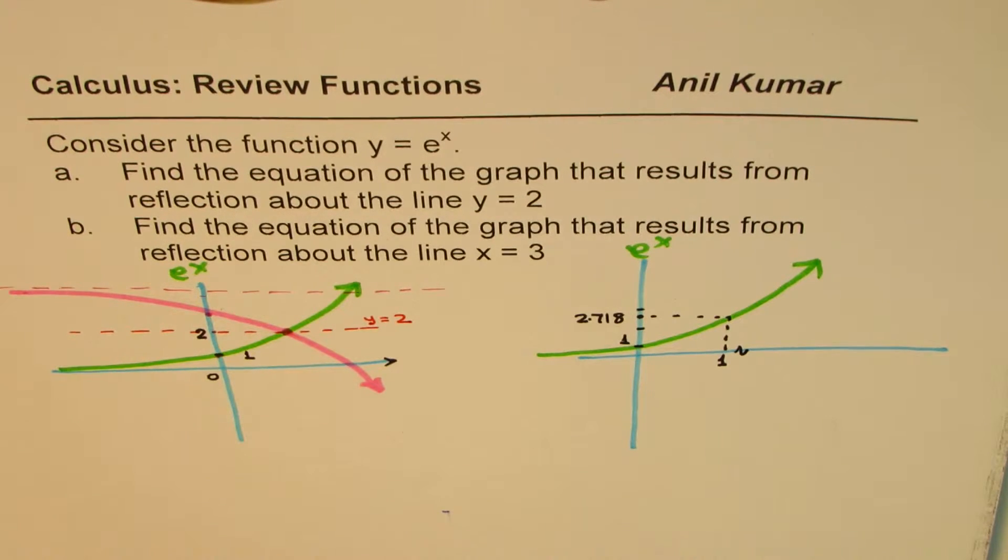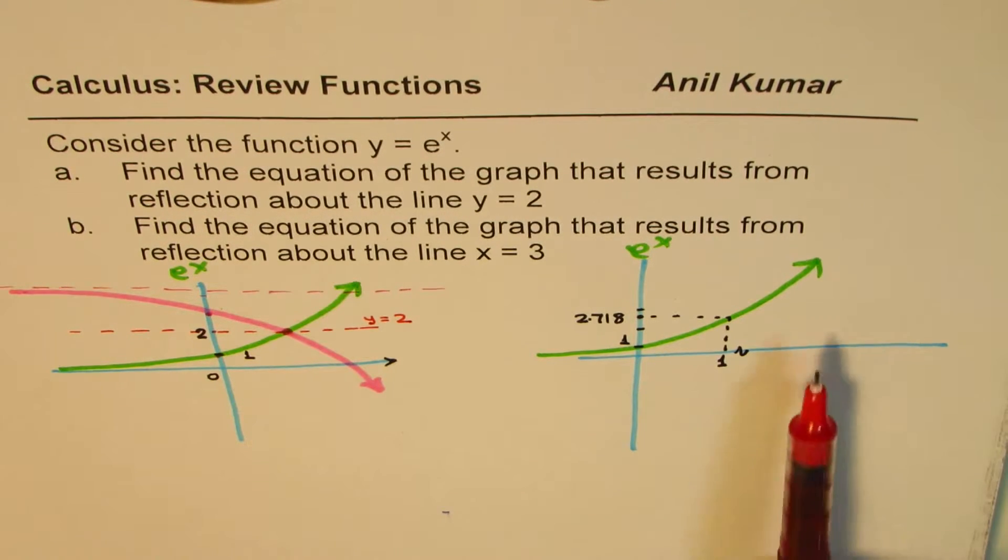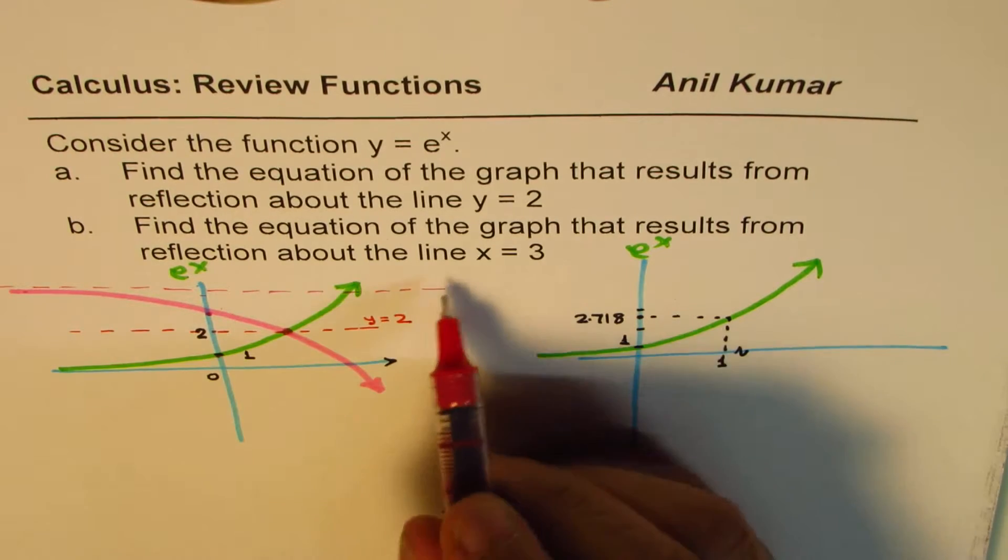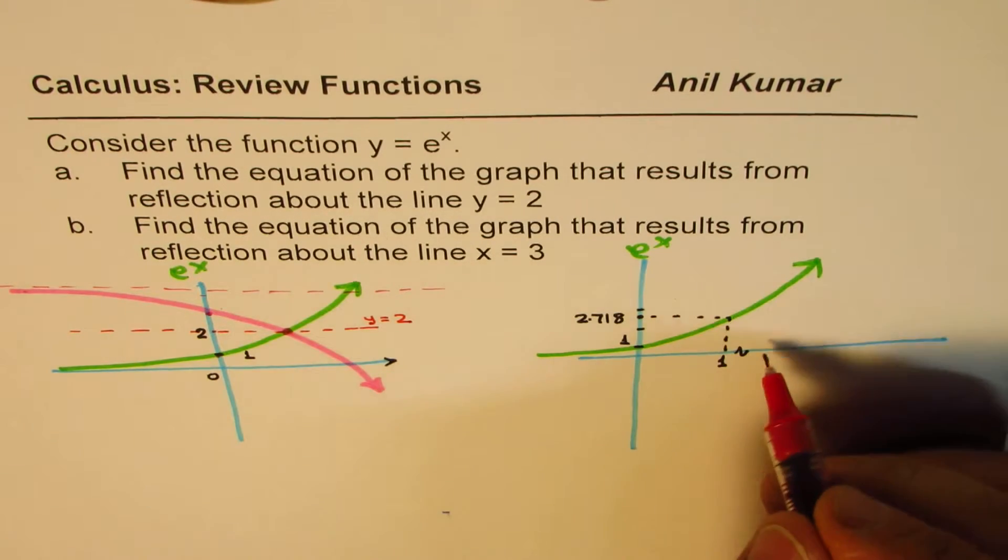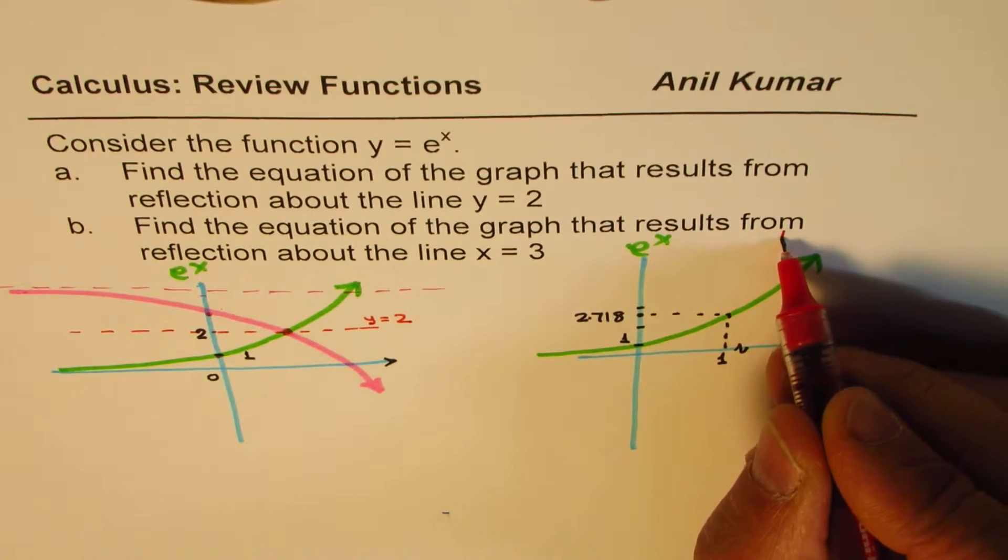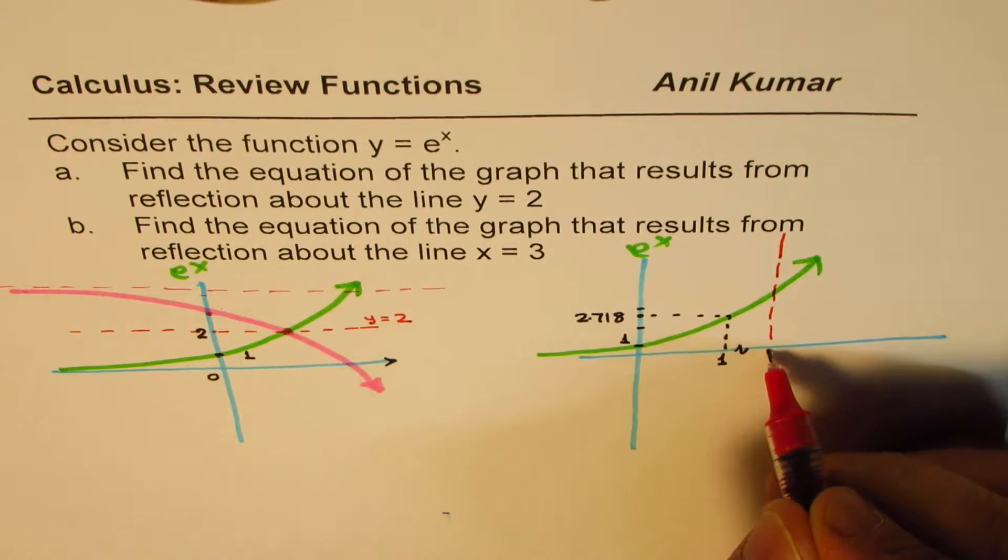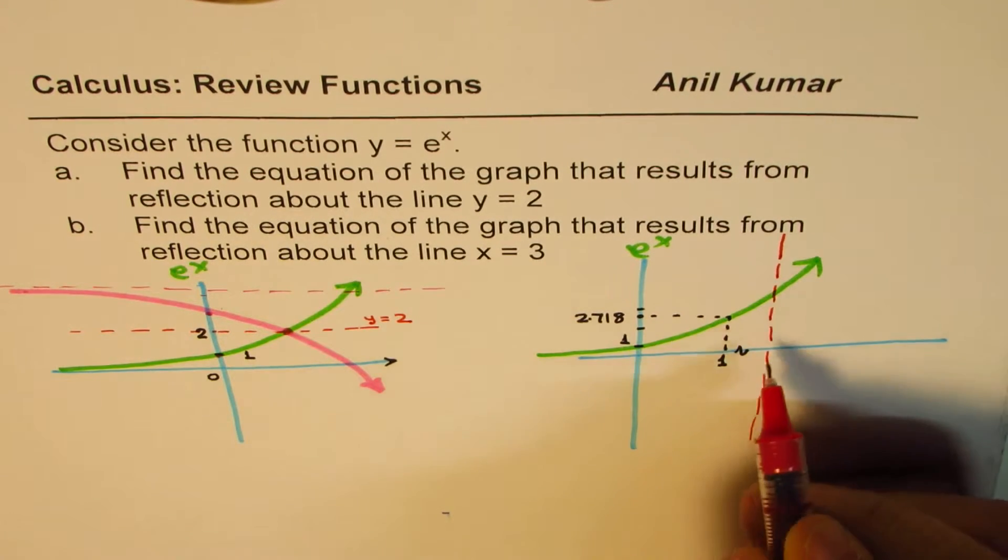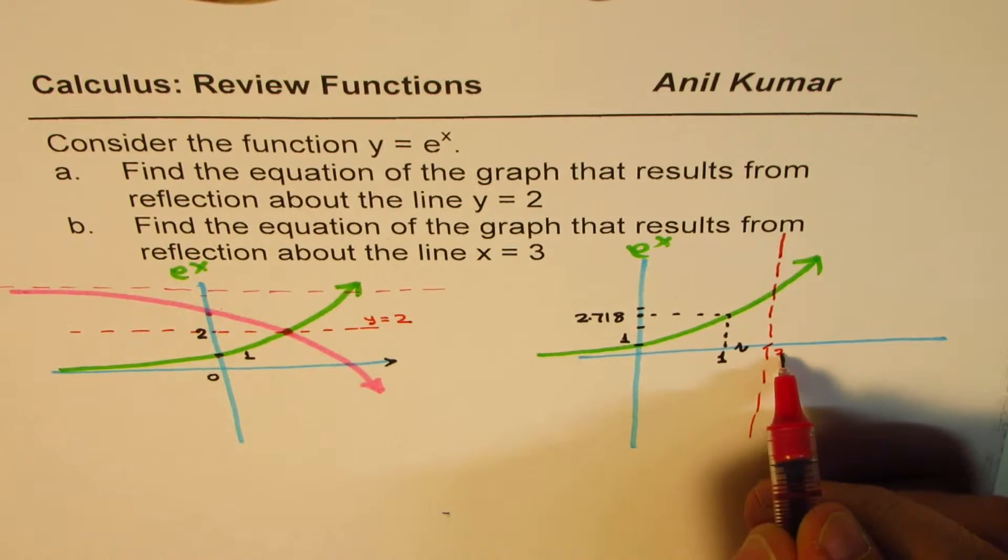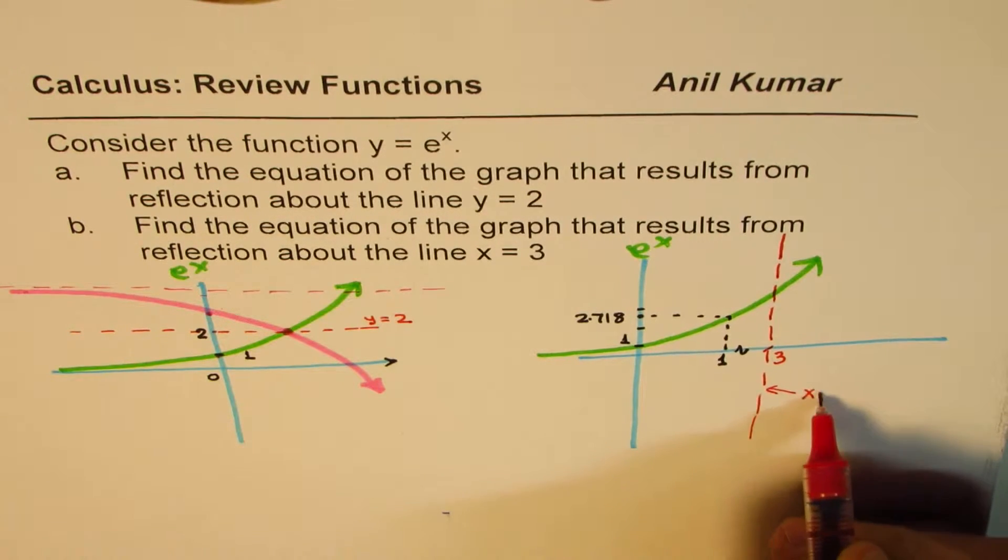Then we have kind of a break here. Since I don't really have space, so I'll draw x equals 3, a line here. So this is my line about which I need to reflect this graph, and this is at x equals 3. So this line is x equals 3.